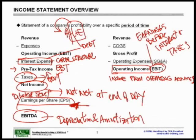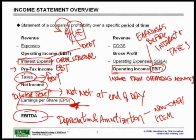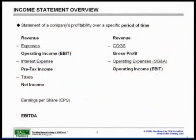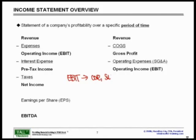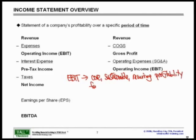As we briefly talked about in the WorldCom example, D&A are non-cash items. EBIT is our Earnings Before Interest and Taxes — Operating Income. This is what I call your Core Sustainable Recurring Profitability from Core Operations.